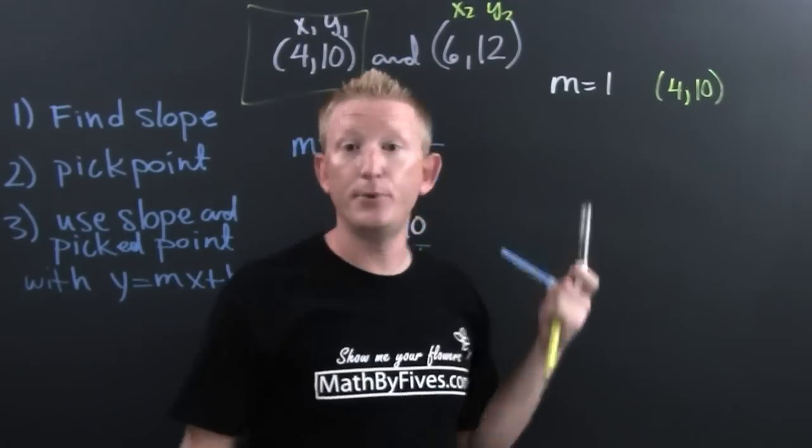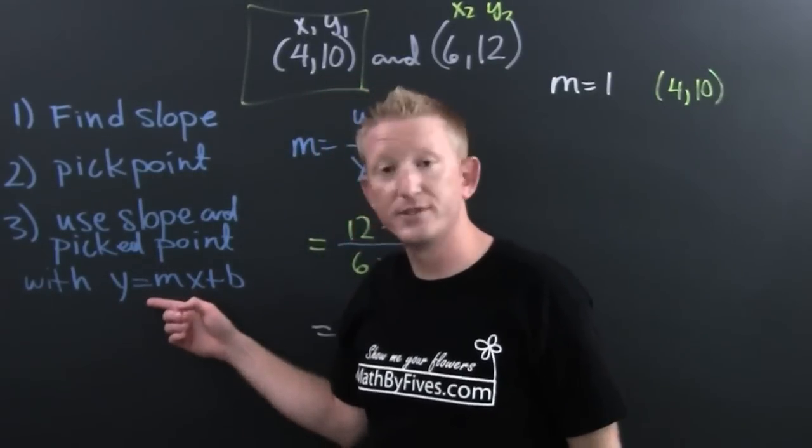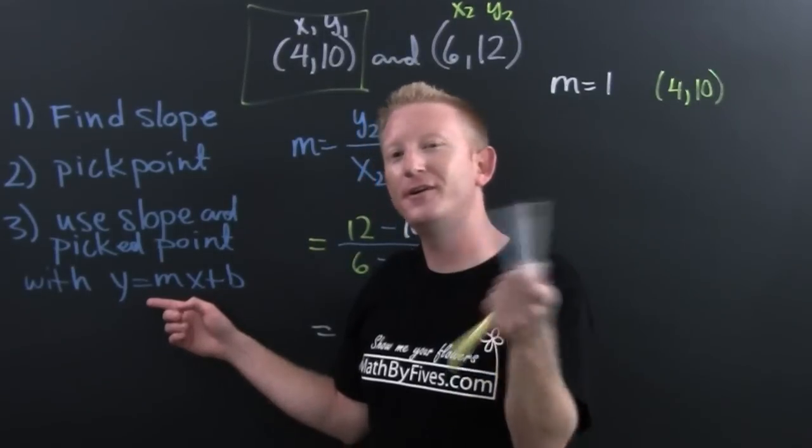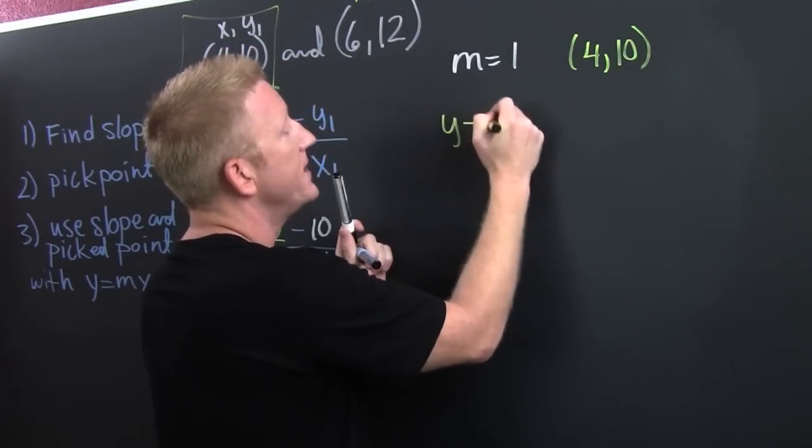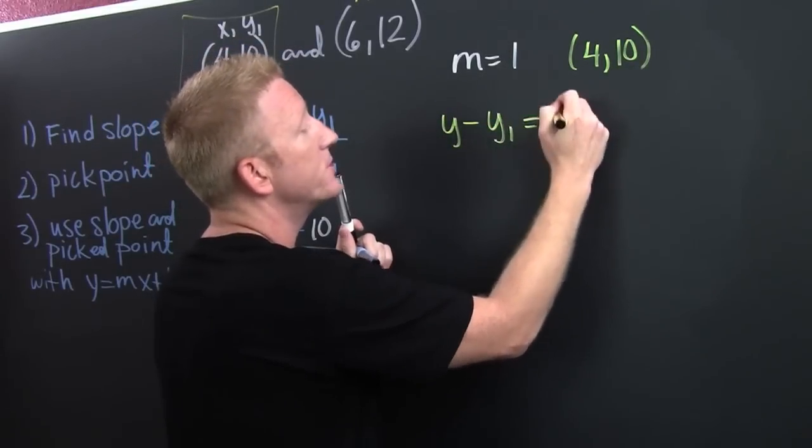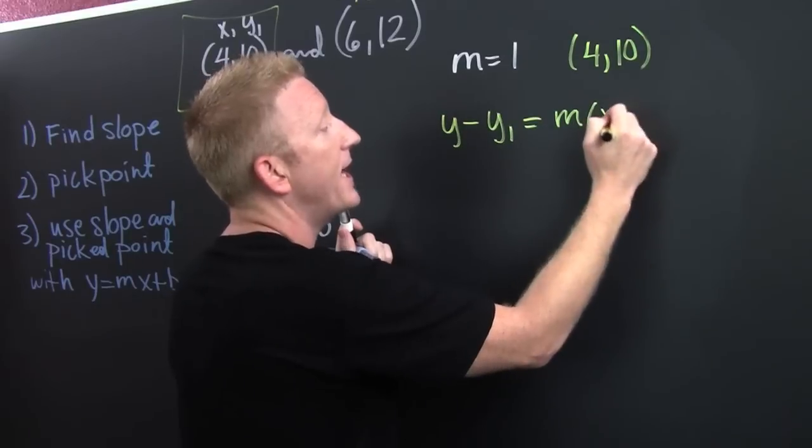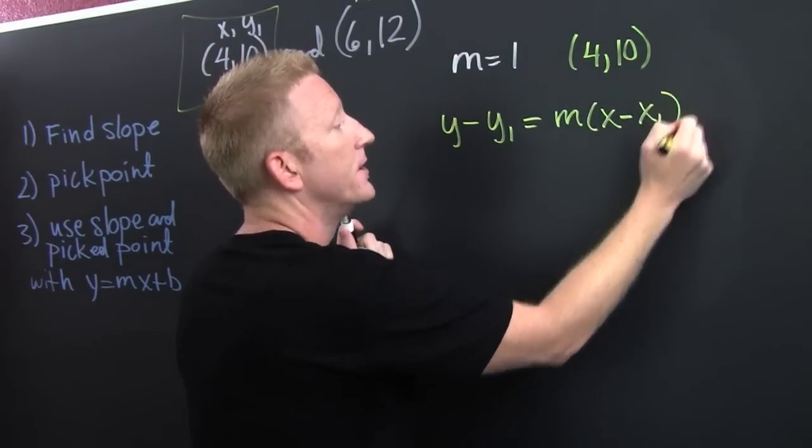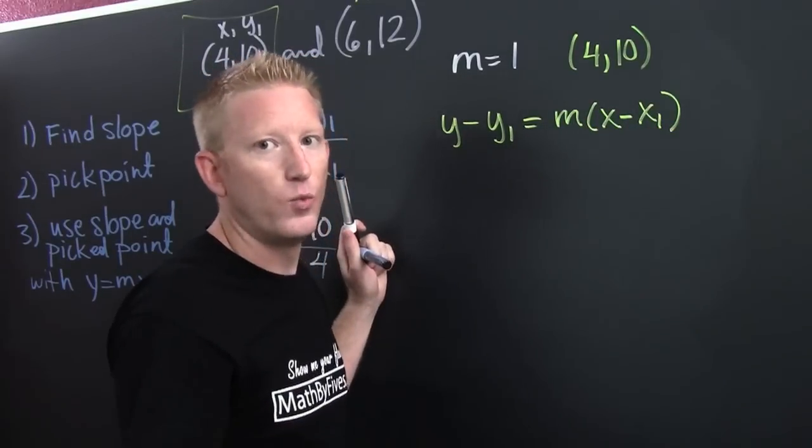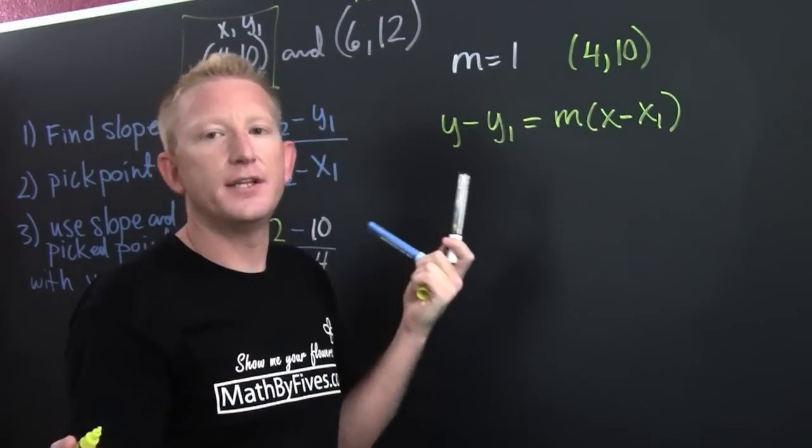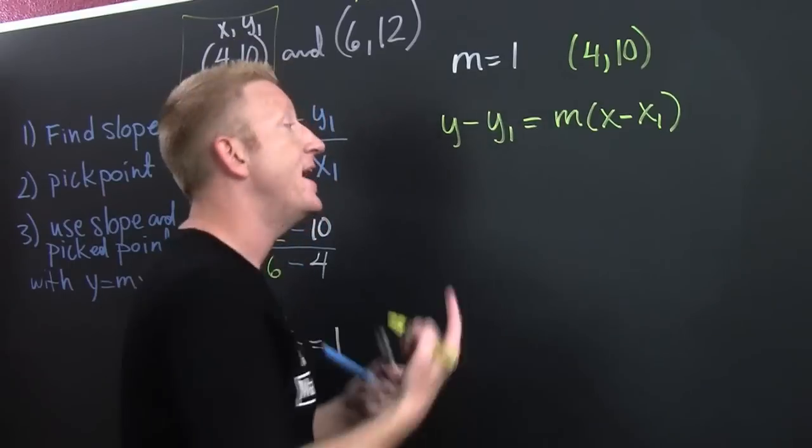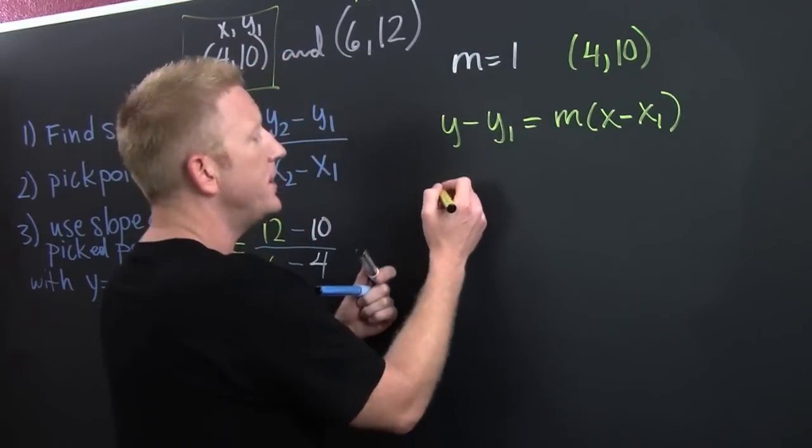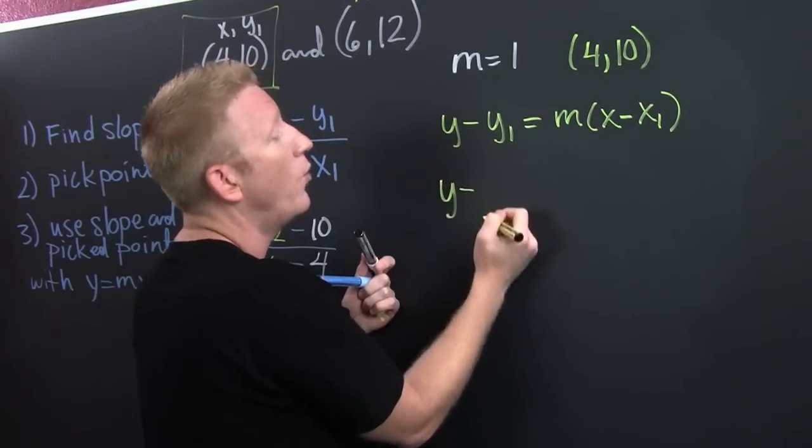And then we just turn it into a problem that we know how to do. With a point and a slope, we're going to put it into y equals mx plus b, or equivalently we can put it into point-slope, which is y minus y1 equals m times x minus x1. Now I'm going to use this one because it's different than the last example and I want you to have exposure to as many methods as possible.